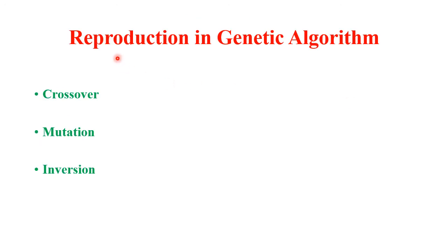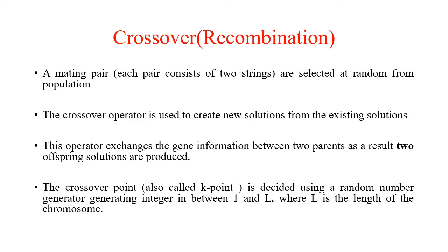Reproduction, the process to produce new offspring in genetic algorithms, includes crossover, mutation, and inversion. In crossover, also called recombination, we require a mating pair — two parents selected at random from the population. The crossover operator is applied on the selected parents to produce new solutions, exchanging gene information between the two parents.